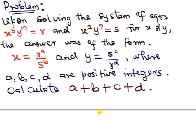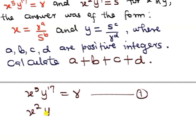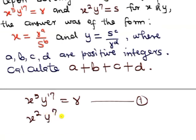So what are we going to do here? First of all, we have two equations. The first one is x^5 * y^17 = r. We can call this equation 1. And the second one is x^2 * y^7 = s. And this is equation 2.